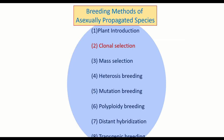Regarding breeding methods of asexually propagated species: there are several breeding methods, but when it comes to breeding methods applicable only to asexually or vegetatively propagated crop plants, it is clonal selection. The rest are either already studied or common to all three types — self-pollinated, cross-pollinated, and asexually propagated crop plants. Those common breeding methods will be discussed in a separate class.